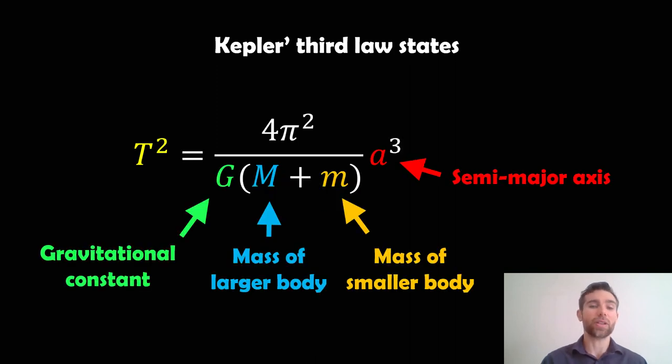Now the full equation then to calculate the actual orbital period is given here. So we've got orbital period on the left, which then equals this on the right. Now on the right, we've got G, which is our gravitational constant.